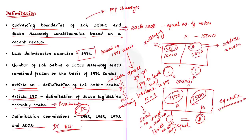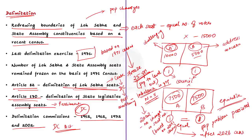After the 1976 delimitation exercise, it was frozen for 25 years due to imbalances in population growth. Even after the 2002 delimitation, the concern persisted, so it was decided that the first census after 2006 would be used for delimitation. Northern states like Madhya Pradesh, Rajasthan, Uttar Pradesh and Bihar have decennial growth rates of 12% to 15%, whereas southern states range from 6% to 10%. It is presumed that after 2026, population leveling will take place.